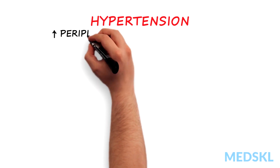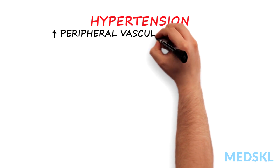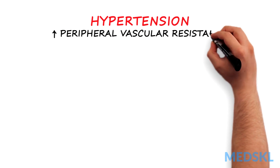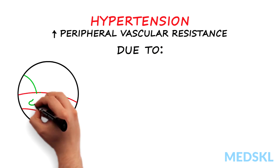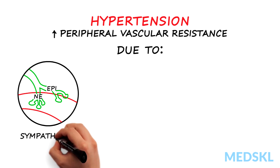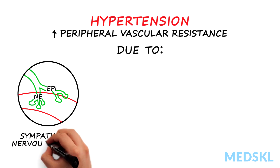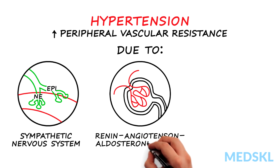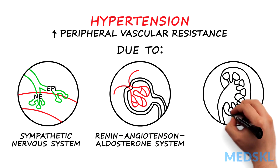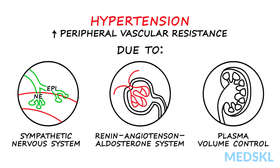Hypertension is most commonly due to an excessive elevation of peripheral vascular resistance, not adequately compensated for by adjustments in either intravascular volume via renal mechanisms or in cardiac contractility. The most significant factors affecting these variables are the sympathetic nervous system, the renin-angiotensin-aldosterone system, and regulation of plasma volume via the kidney.